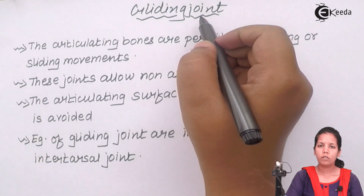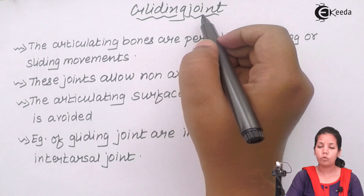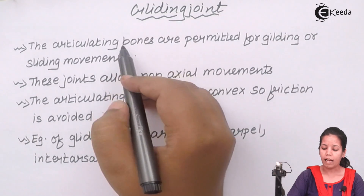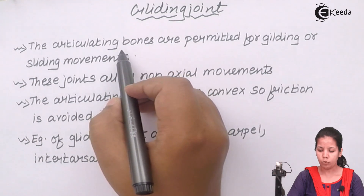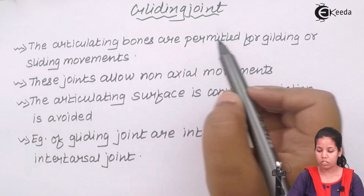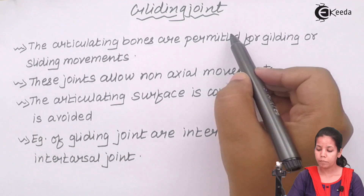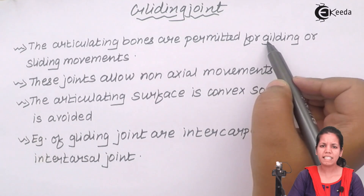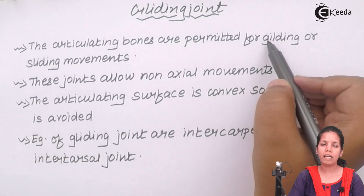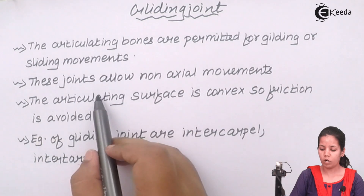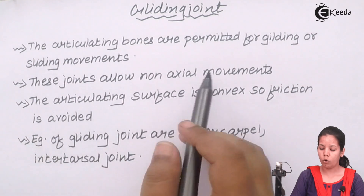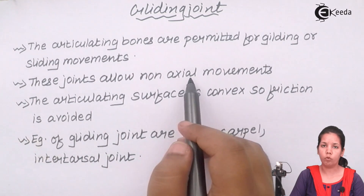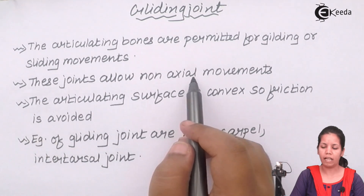Gliding joints are joints that help you to slide. The articulating bones in these regions are permitted for gliding or simply sliding movements, just to move in a smooth manner. These joints allow non-axial movement particularly.